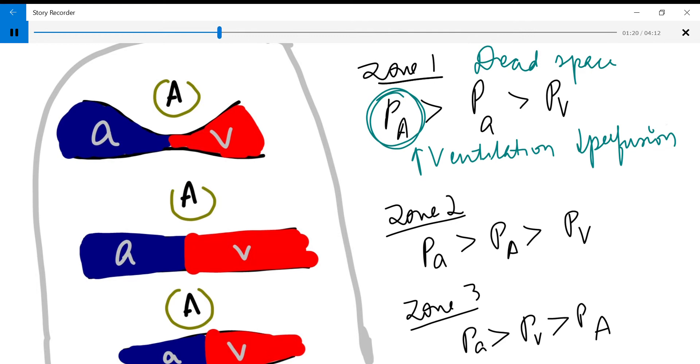In the second zone there is good ventilation. Both ventilation and perfusion are almost equalized and increased. In the last zone we have increased perfusion and decreased ventilation.